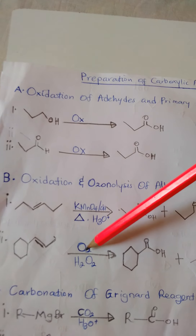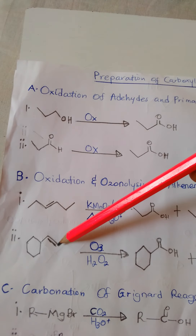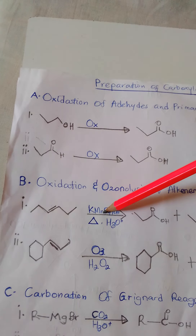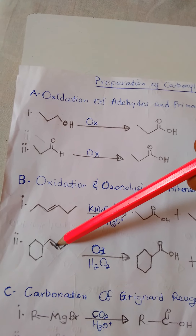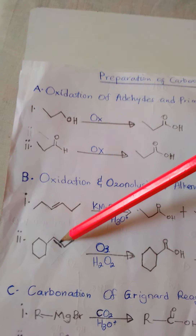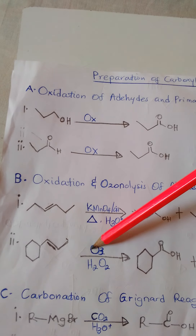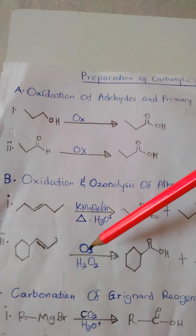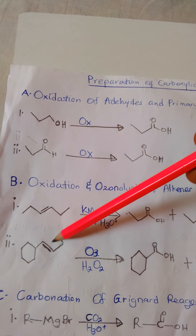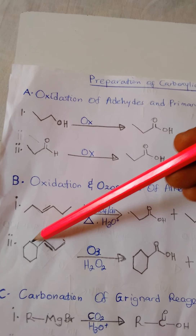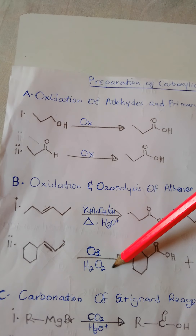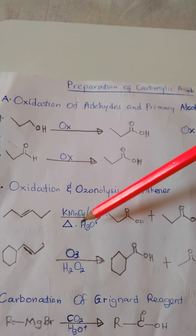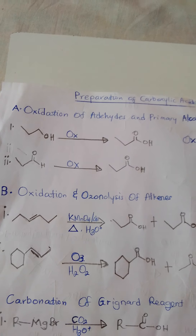Next is ozonolysis. Ozone is added to an alkene and performs the same function as hot potassium permanganate — oxidative cleavage of the double bond. Ozone followed by hydrogen peroxide hydrolysis cleaves the double bond so that each end is converted to a carboxylic acid. No matter how bulky the alkene is, there will be a cleavage of the double bond and each end will be converted to a carboxylic acid.